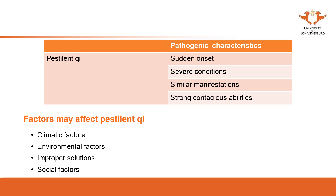Traditionally in Chinese medical books, these kinds of diseases are described very dramatically: a patient may be attacked by the disease in the morning and pass away in the evening. For some moderate patients, they can pass away in a few days. This is what is meant by sudden onset and severe condition.